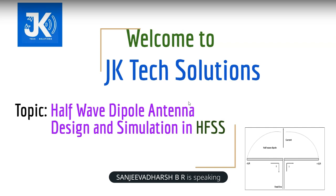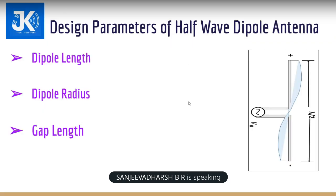Let's start with mathematical calculation. These are the design parameters that we are going to consider for designing a half wave dipole antenna: dipole length, dipole radius, and gap length. These three parameters are going to be used to design the antenna.